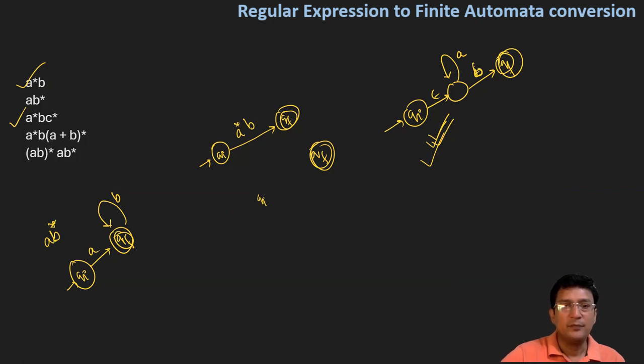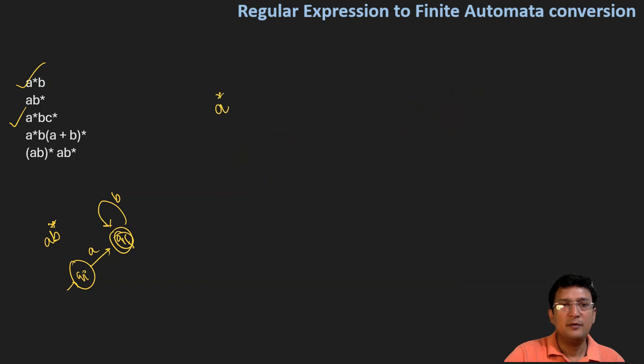Next is a*bc*. We have different components here - a*, bc*. Break down the regular expression step by step. First component handles a transition, then we move to next step for bc*, which leads to final state.